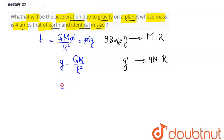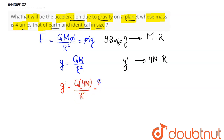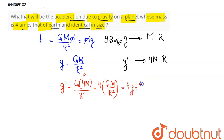So the value of g' on the new planet comes out to be G times 4M divided by R squared. This simplifies to 4 times GM divided by R squared, and since GM/R² equals the value of small g on Earth...